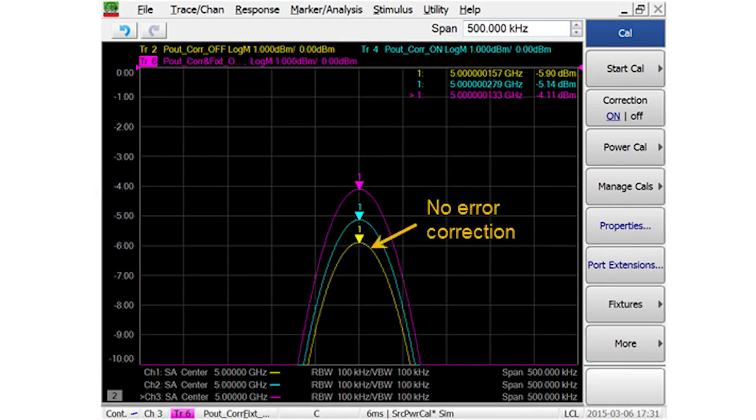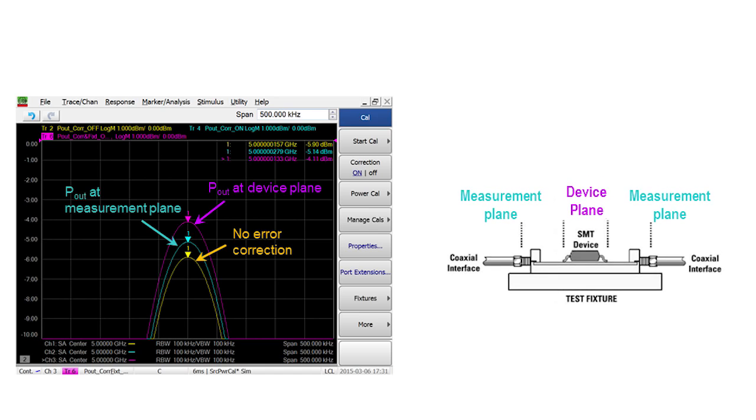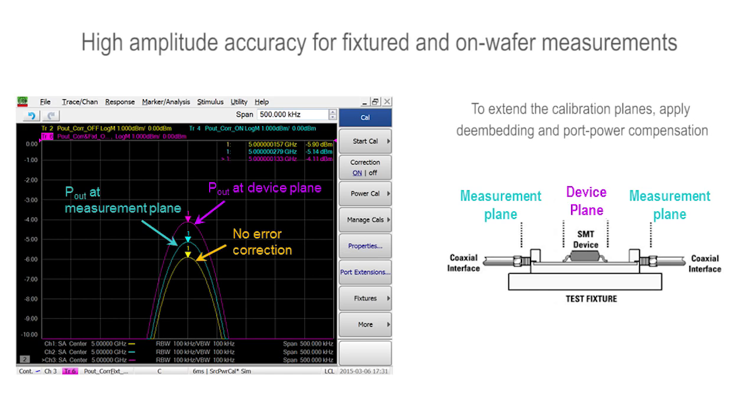All of the spectrum analysis measurements can be performed with calibration, which removes cable losses and corrects the frequency responses of the measurement receivers. If the measurement is performed on a device in a fixture or measured on wafer, de-embedding and port power compensation can be applied to extend the calibration planes directly to the input and output pins or pads of the device. All of this gives high levels of amplitude accuracy when measuring spurious signals, ensuring you know exactly how your converter is performing.